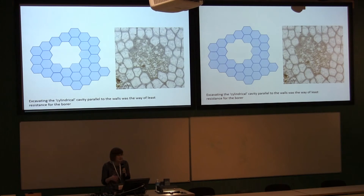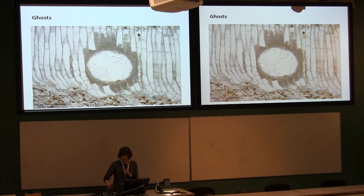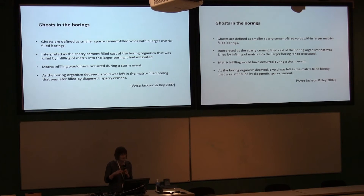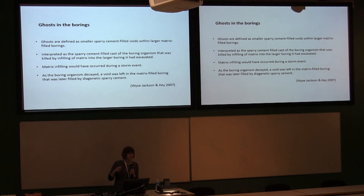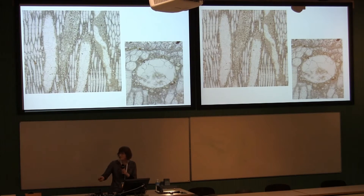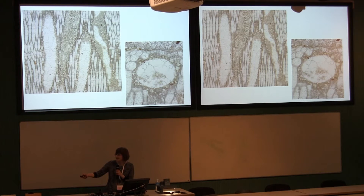We do find ghosts within these borings — clear, cylindrical tubes of calcite surrounded by micrite. Ghosts are defined as smaller sparite calcite voids within the larger micrite-filled borings, interpreted as casts of the boring organism, possibly killed by matrix infilling during a storm event. As the boring organism decayed, a void formed, which was filled by diagenetic sparite. These were first identified in Estonia, and in our material they are very common — always cylindrical, whereas the actual boring around them is much more polygonal.